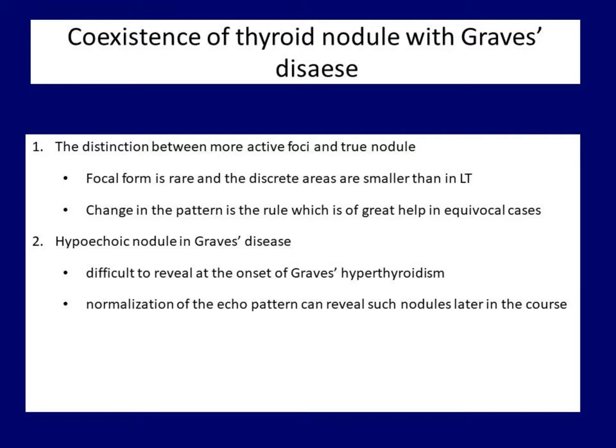So, if we have any doubt about the origin of a discrete hypoechoic lesion, a repeat examination and comparison of the ultrasound images usually resolves the issue. This change in the basic echo pattern is also of great help to reveal hypoechoic nodules which were covered by diffuse hypoechogenicity at the onset of hyperthyroidism.